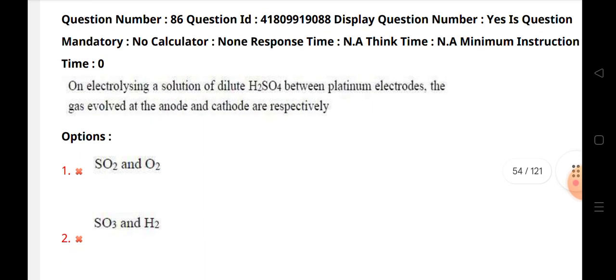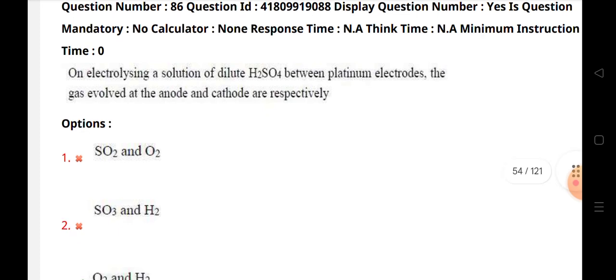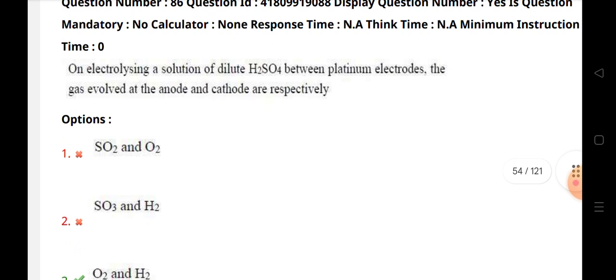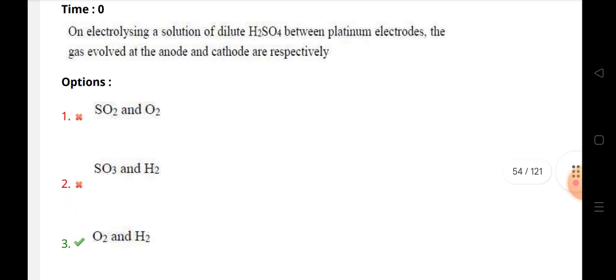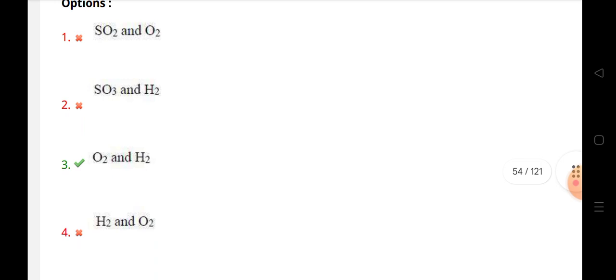On electrolyzing a solution of dilute H2SO4 between platinum electrodes, the gas evolved at the anode and cathode are respectively oxygen and hydrogen, O2 and H2.